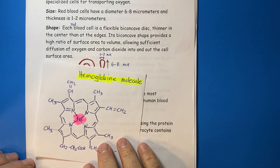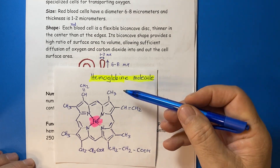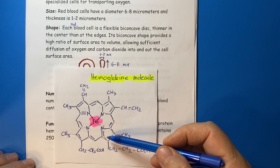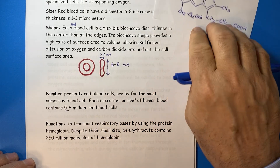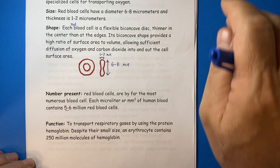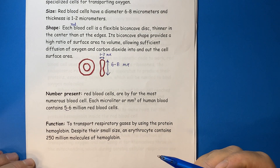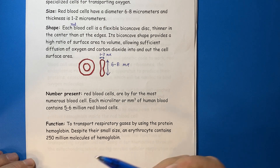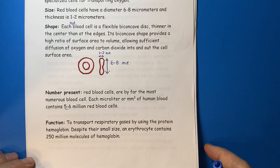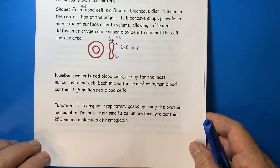Hemoglobin is a complex molecule, and an image is provided here. Despite their small size, an erythrocyte contains around 250 million molecules of hemoglobin.